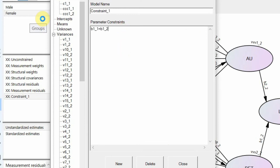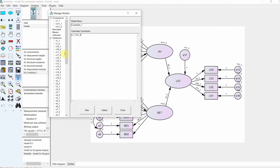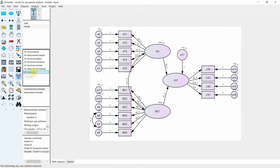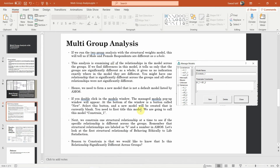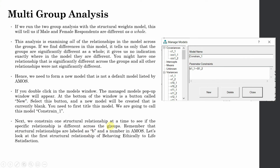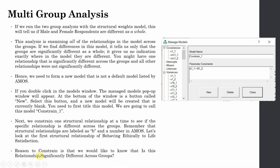Paste your parameter constraints and click close. You have now created a new constraint. The reason for the constraint is that we would like to know whether this relationship is significantly different across groups.